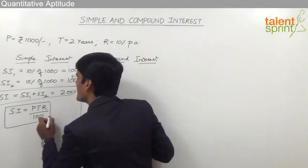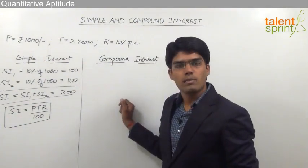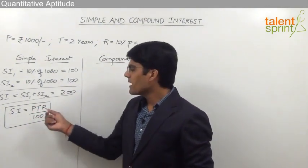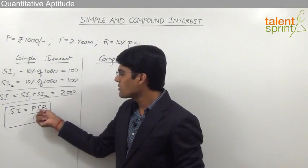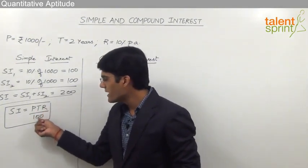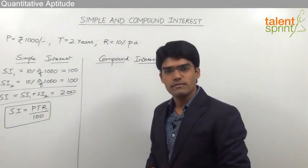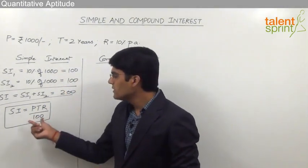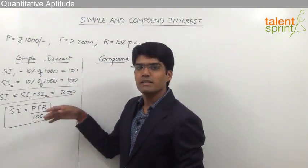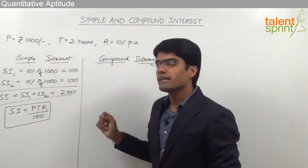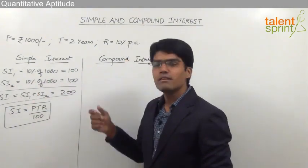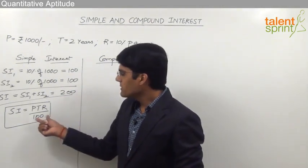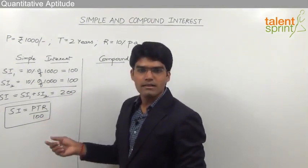Simple interest SI equals P × T × R ÷ 100, where P is the principal amount, T is the time period, and R is the rate of interest. Substituting: 1000 × 2 × 10 ÷ 100 = 200 rupees. For examination purposes we use this formula directly, but what happens behind the formula is: 100 rupees for the first year and 100 rupees for the second year, giving a total of 200 rupees.